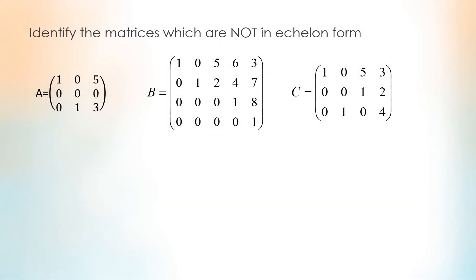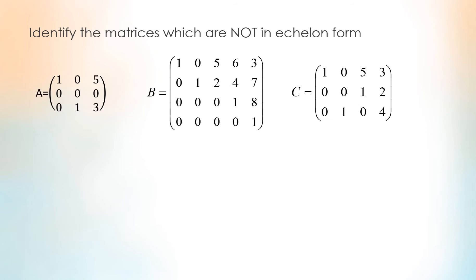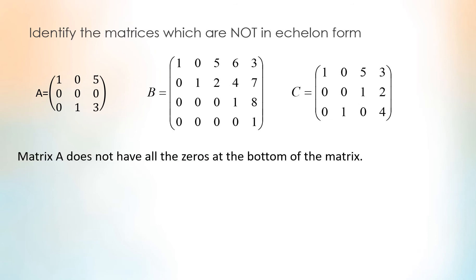Can you identify the matrices which are not in echelon form? Is it matrix A, matrix B, or matrix C? Let's look closely at each of the matrices. For matrix A, notice that it does not have all the zeros at the bottom of the matrix. Hence, matrix A is not in echelon form.